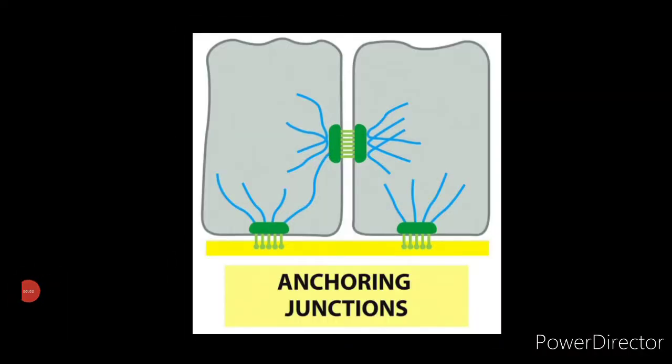Hello friends, welcome to my channel. Today's topic is anchoring junctions, which is one of the three functional classes of cell junctions. The remaining two are occluding junctions, also called tight junctions, and communicating junctions, also called gap junctions.